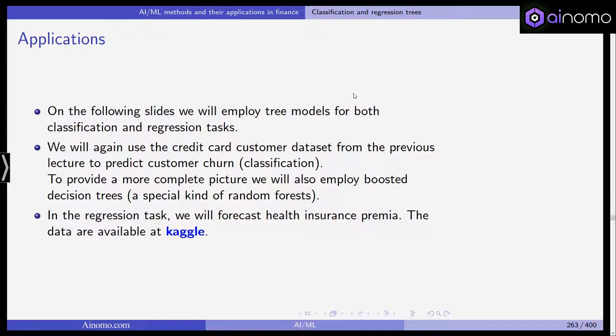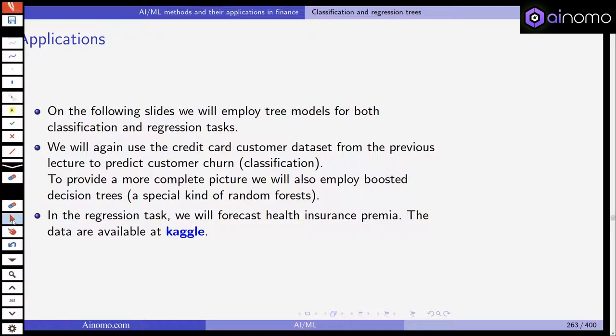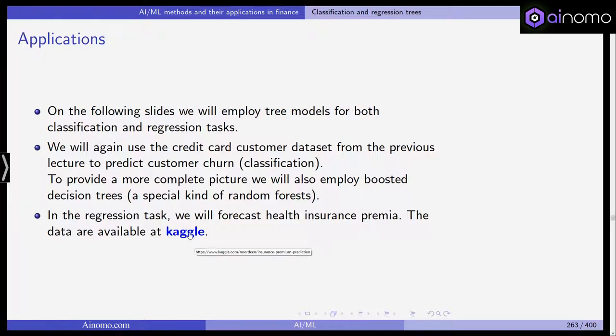In the regression task later on we will forecast health insurance premium. In this case we have a metric response variable in contrast to the binary one in the previous customer churn example. Both data samples are available at Kaggle and you can see we've included the links here at Kaggle for both the customer churn data and the insurance premium.